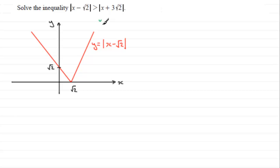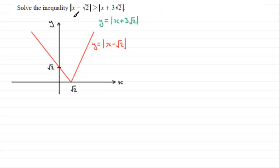Next we need to draw the graph y equals the mod of x plus 3 root 2. Again without the mod this would be a linear function with the same gradient, so it's going to be parallel, and it would cut the y-axis at 3 root 2. We would have a line coming down, crossing the y-axis at 3 root 2 — it's not drawn to scale but hopefully it gives you an idea.